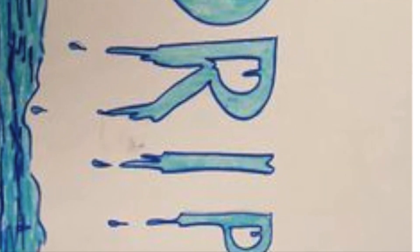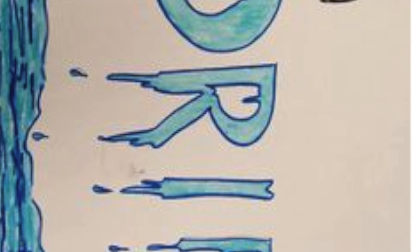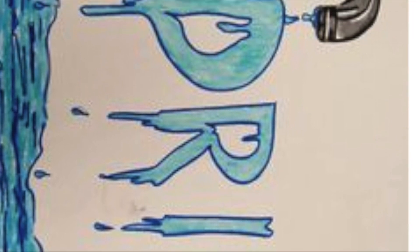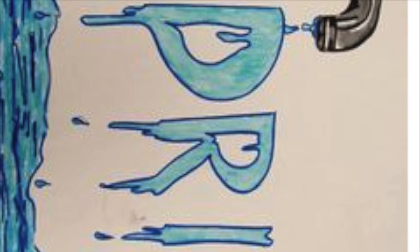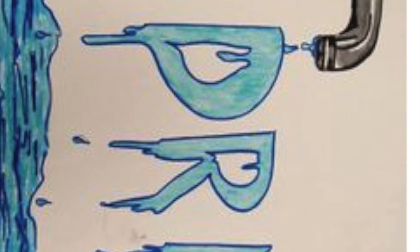Here you see the word drip written D-R-I-P and it looks like it's dripping down from the letters.